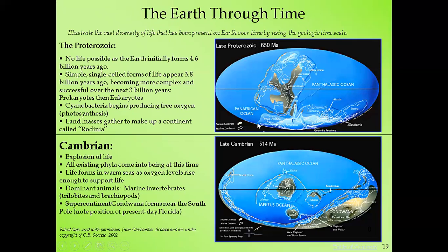Land masses gathered to form a continent called Rodinia. After the Proterozoic, in the late Cambrian about 514 million years ago, there was the Cambrian explosion of life — all existing phyla came into being at this time. Life forms flourished in warm seas as oxygen levels rose enough to support life. Bacteria and mosses — part of the cyanobacteria — multiplied and produced more oxygen to support different life organisms.